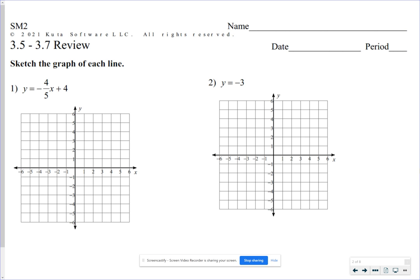All right, these videos are going to do the 3.5 through 3.7 review, and we're just going to dive right in. Problems 1 and 2, sketch the graph of the line. Notice this is in the form y equals mx plus b, so our y-intercept is 4.